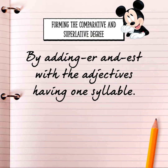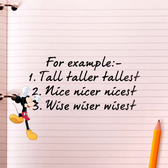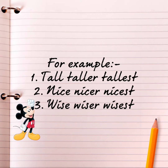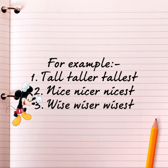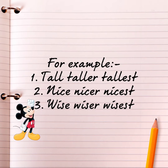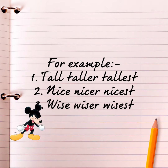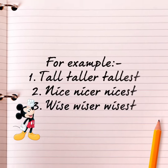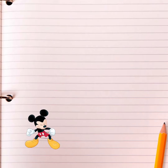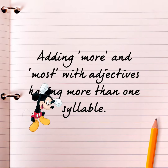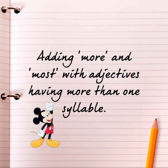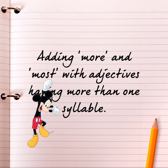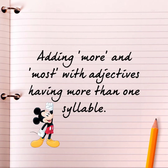Forming the comparative and superlative degree by adding -er and -est with adjectives having one syllable. For example: tall, taller, tallest; nice, nicer, nicest; wise, wiser, wisest.